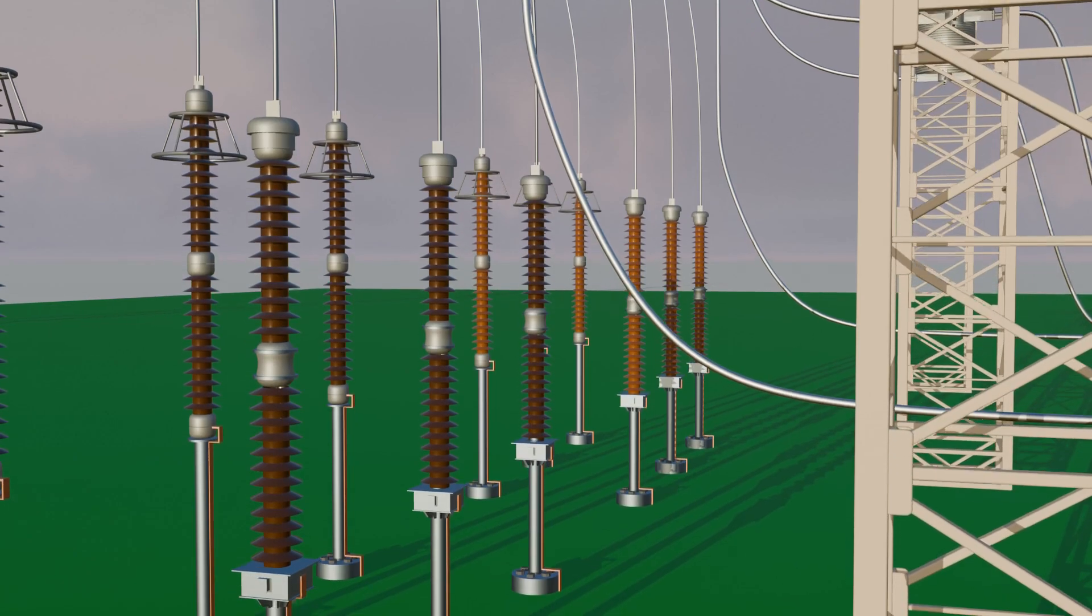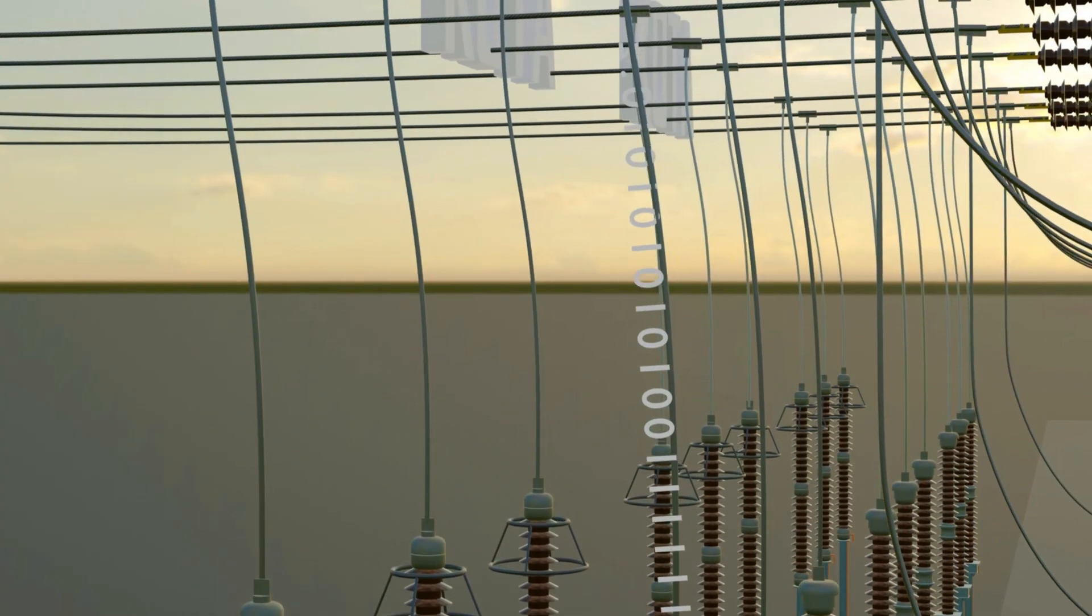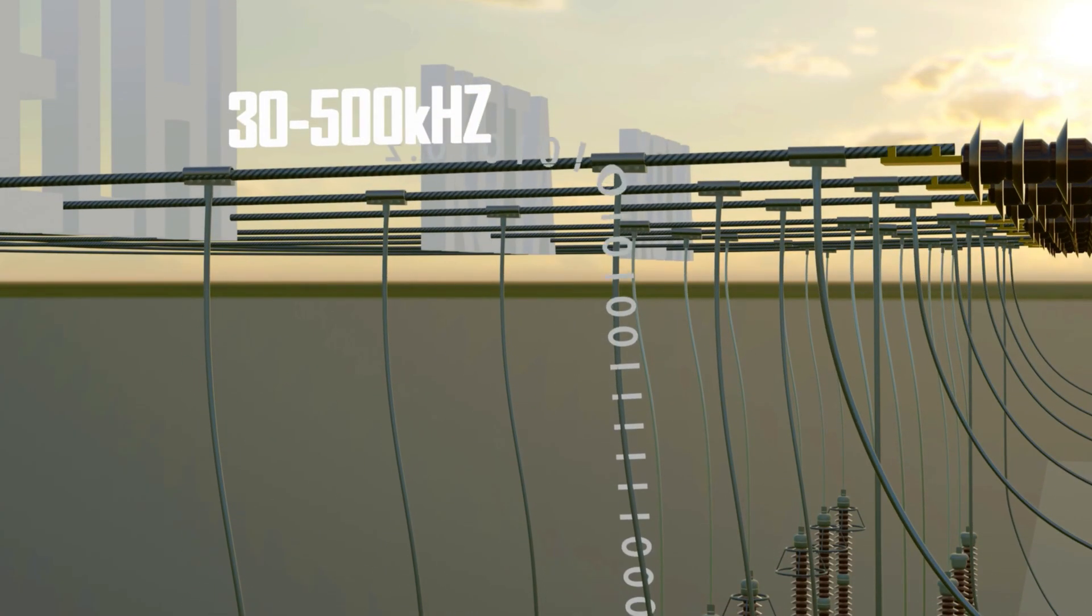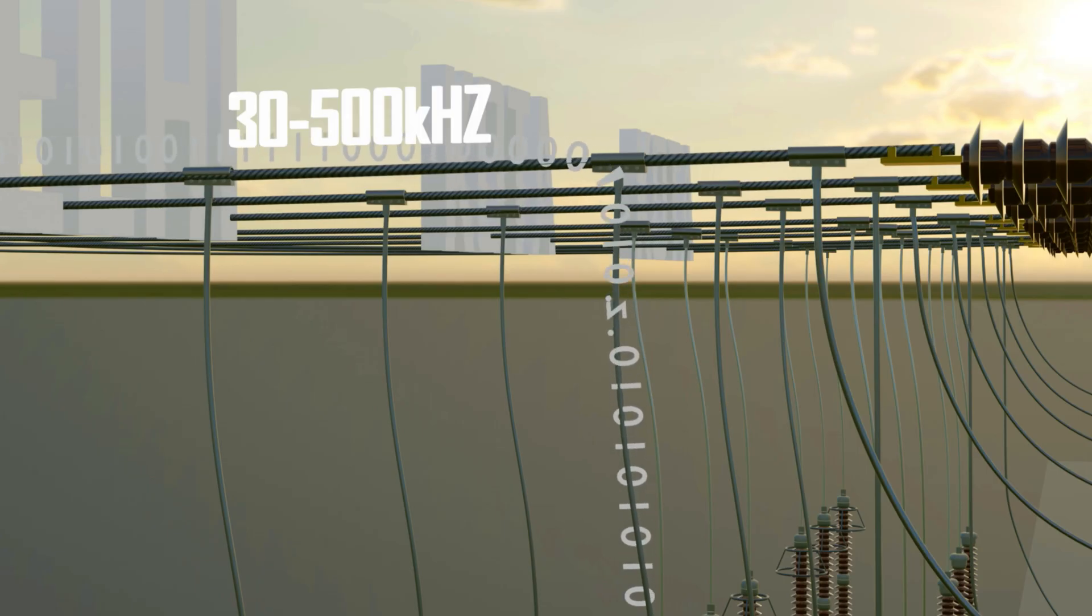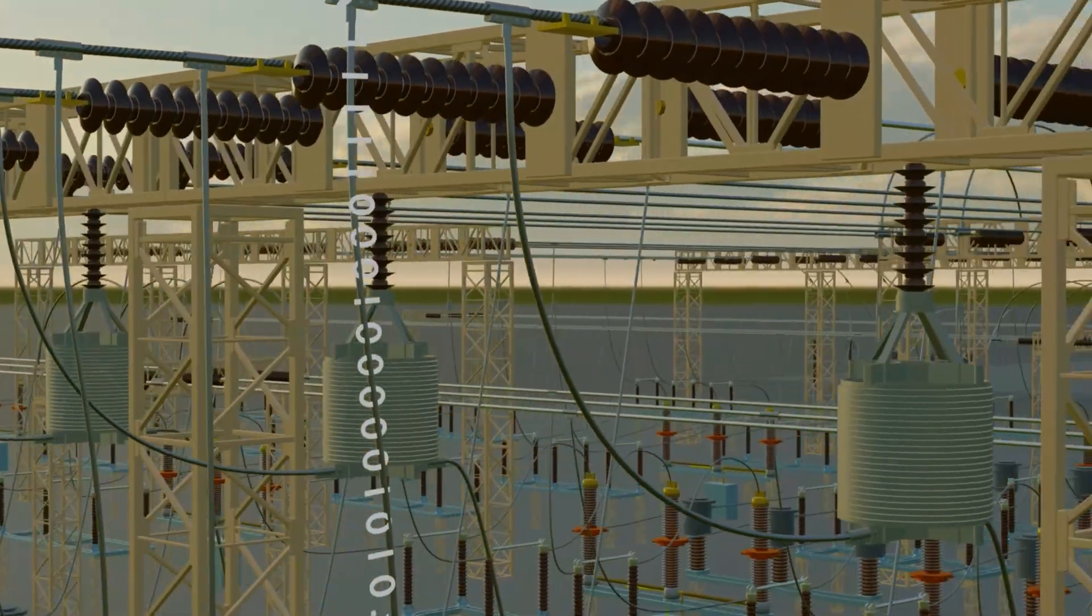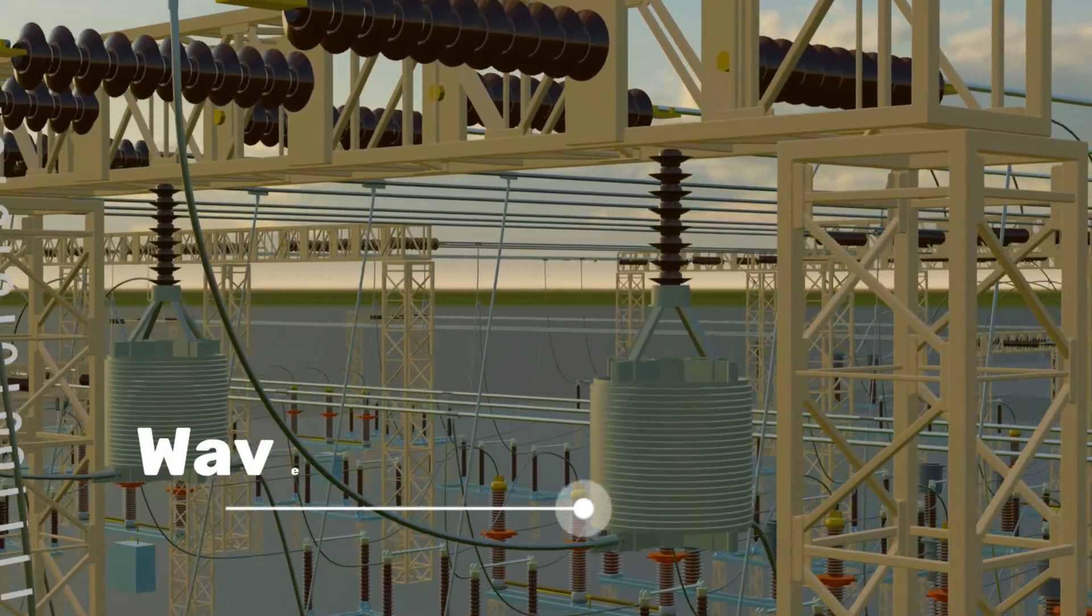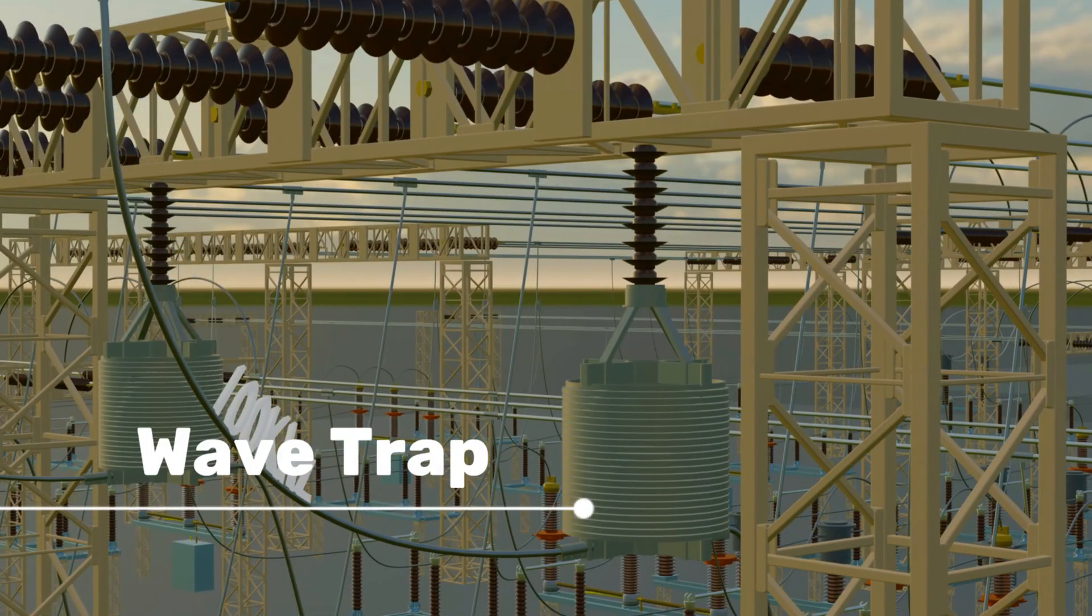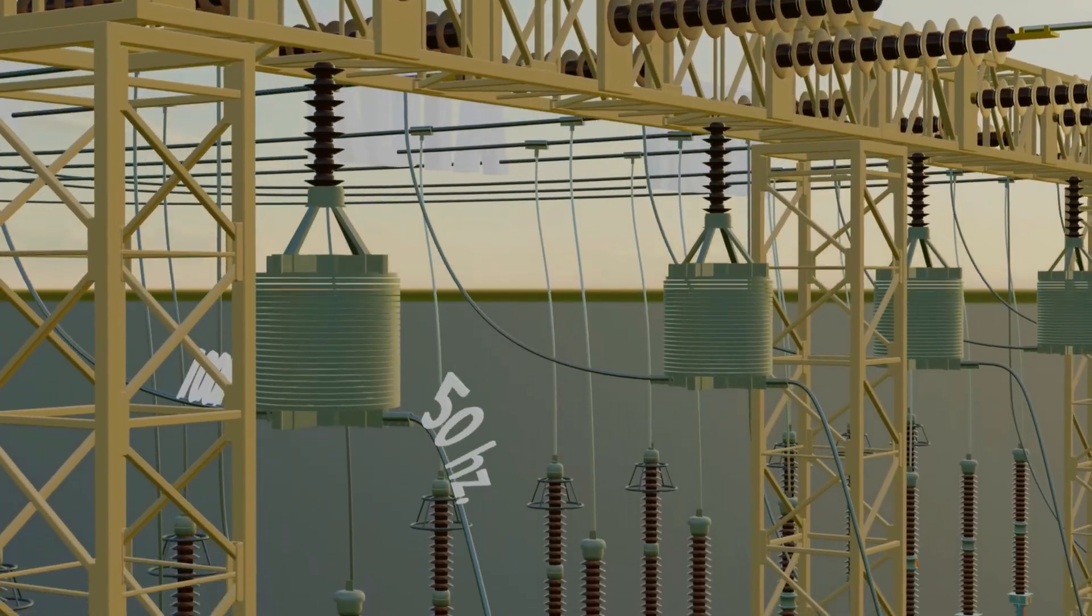Apart from power transmission, the transmission line can also carry communication signals from one substation to another. The CVT injects these high frequency signals into the line and later collects them as well. But we only need 50 hertz power frequency in the line, so a wave trap blocks the high frequency communication signals and allows only the 50 hertz power to pass ahead.